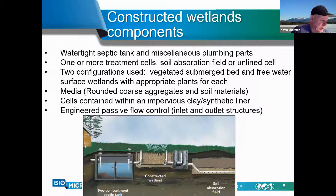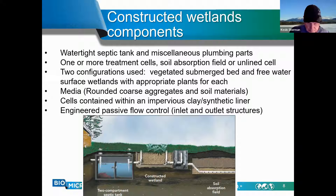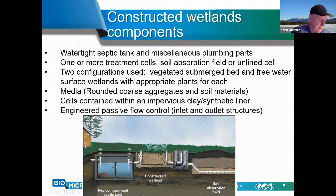The components of a constructed wetland are a watertight and structurally sound septic tank, a treatment cell or multiple cells, and plants. A single treatment cell is the minimum acceptable. Treatment cells can be either lined or unlined, with a free water surface or with vegetation, as shown in this artistic rendering, where the plants are rooted into gravel and the water level is set by the elevation of the outlet device. That elevation sets the water level to just underneath the ground surface.